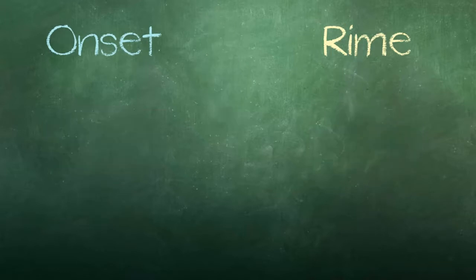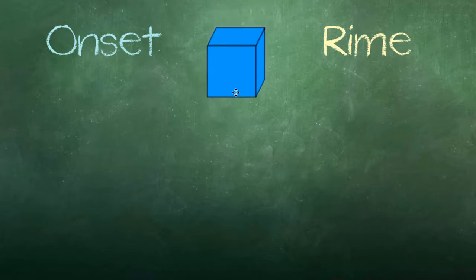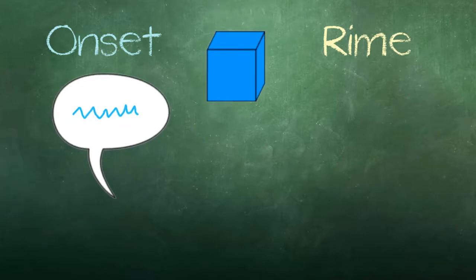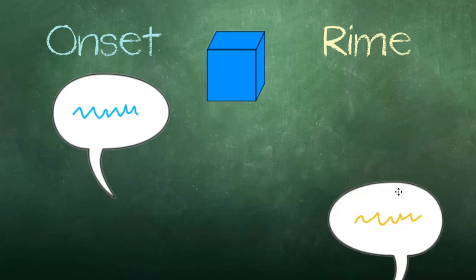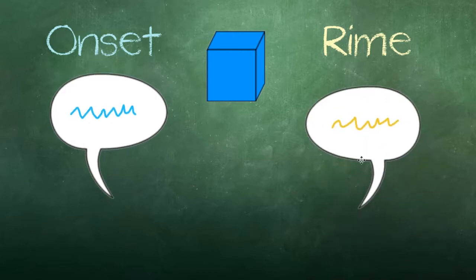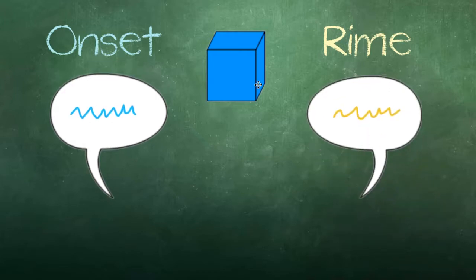Let's look at another word: block. The onset is /bl/. The rhyme is /ock/. /bl/... /ock/... block.